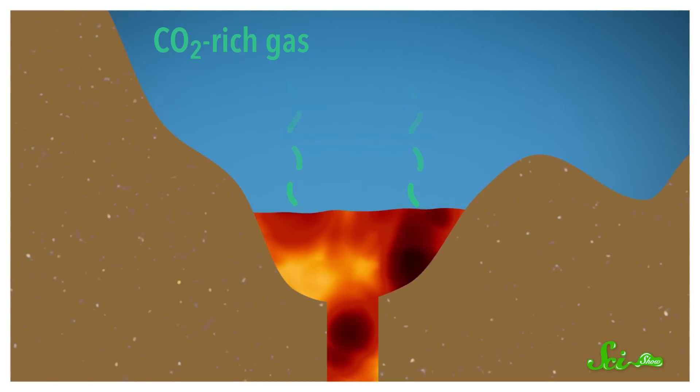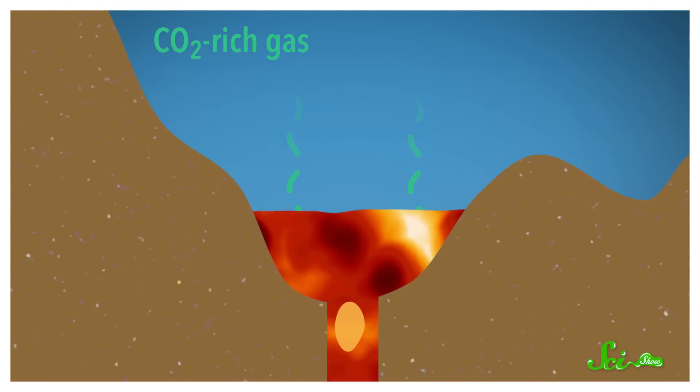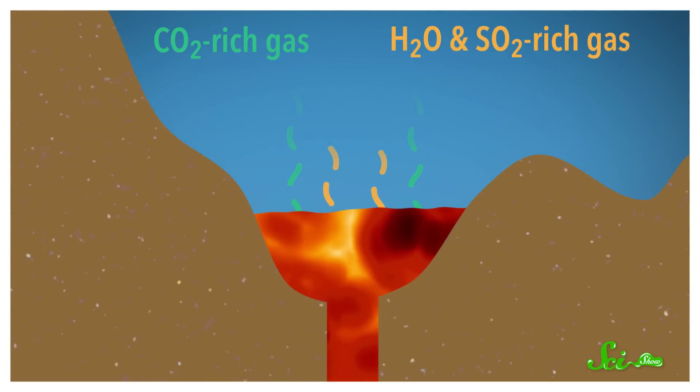But the conduit also occasionally, like every 10 minutes or so, burps out a large blob of magma from deeper in the chamber, like a kind of literal one-way lava lamp. Once a blob gets near the surface of the lake, it releases a fresh set of gases, which adds to the total amount of gas detected and changes the overall composition, because it's rich in water vapor and sulfur dioxide.